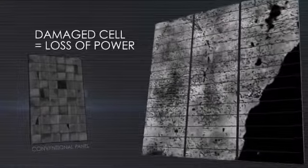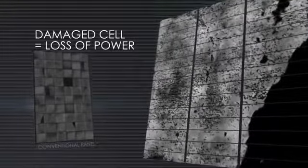What's the problem with cracked cells? In conventional panels, damaged cells essentially stop working, reducing the panel's power output. They can also cause the panel to heat up and accelerate aging.